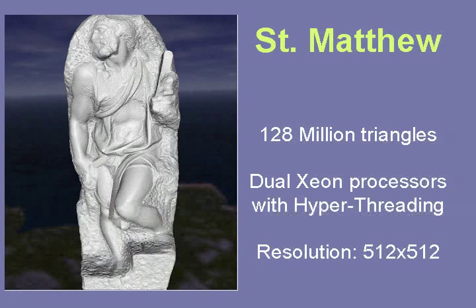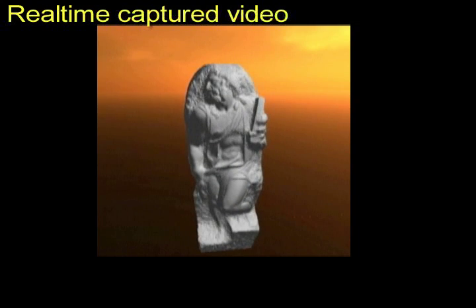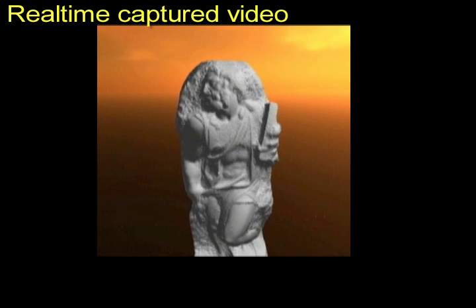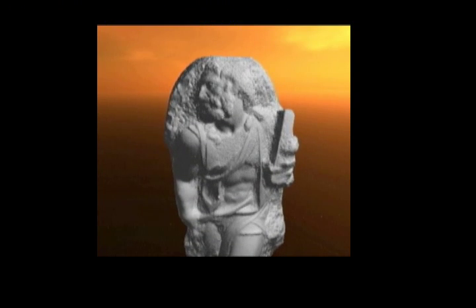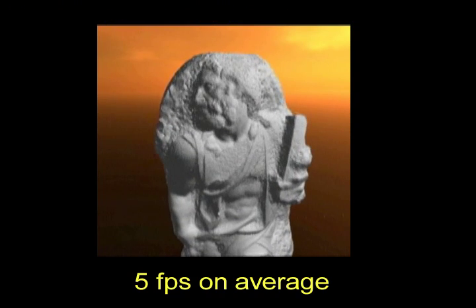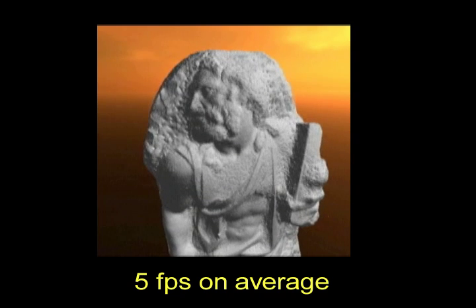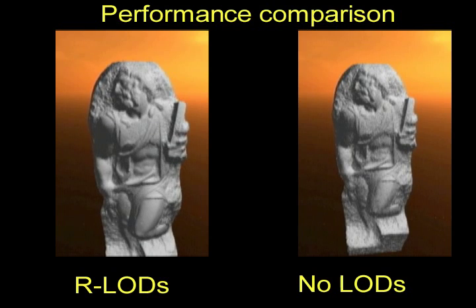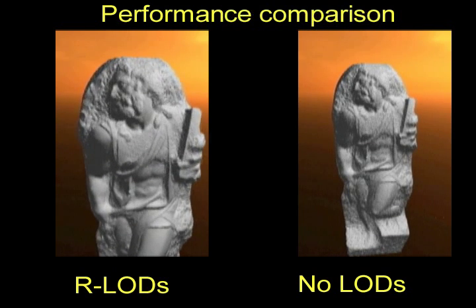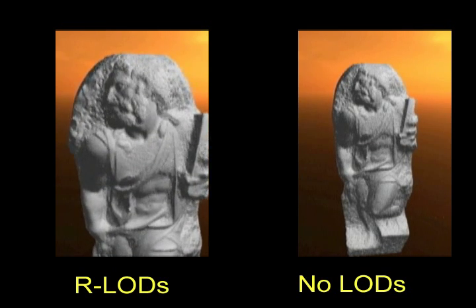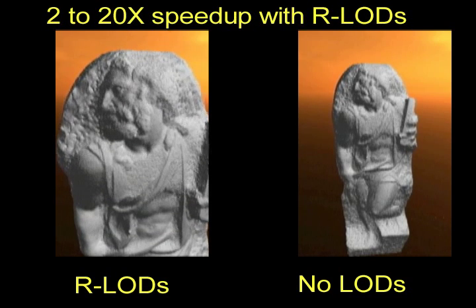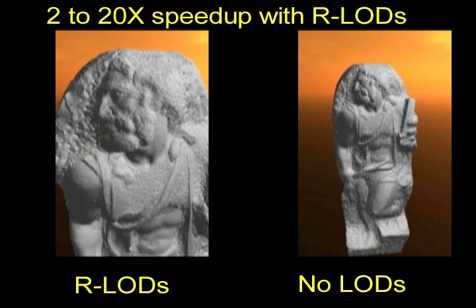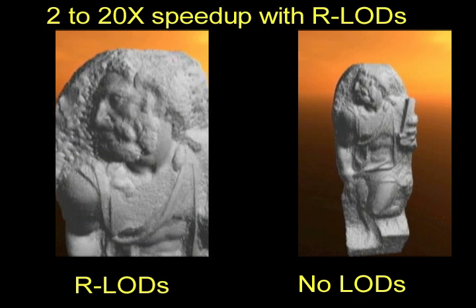We applied our algorithm to the St. Matthew model consisting of 128 million triangles. We are now looking at a real-time captured video of rendering the St. Matthew model. We are able to achieve 5 frames per second on average. Moreover, we are able to achieve 2 to 20 times improvement on frame rates by using our LODs.